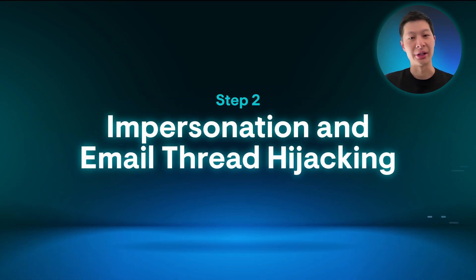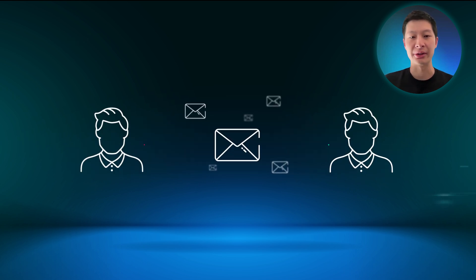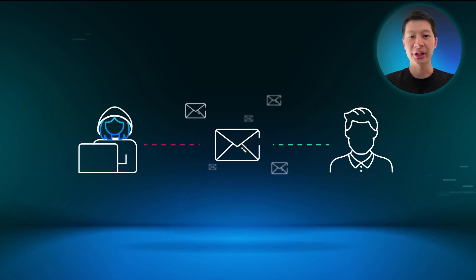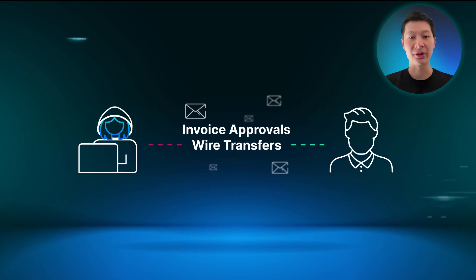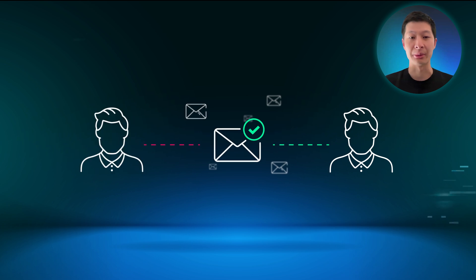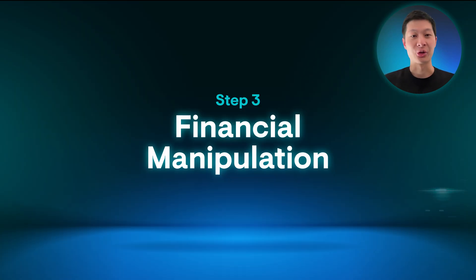Step two is impersonation and email thread hijacking. Once an attacker has gained initial access, they will begin to impersonate a vendor or an employee from within the compromised Microsoft 365 account. The attacker can easily jump into existing conversations about payments like invoice approvals, wire transfers and vendor negotiations. Nothing looks off because the attacker's messages are coming from a credible email account.